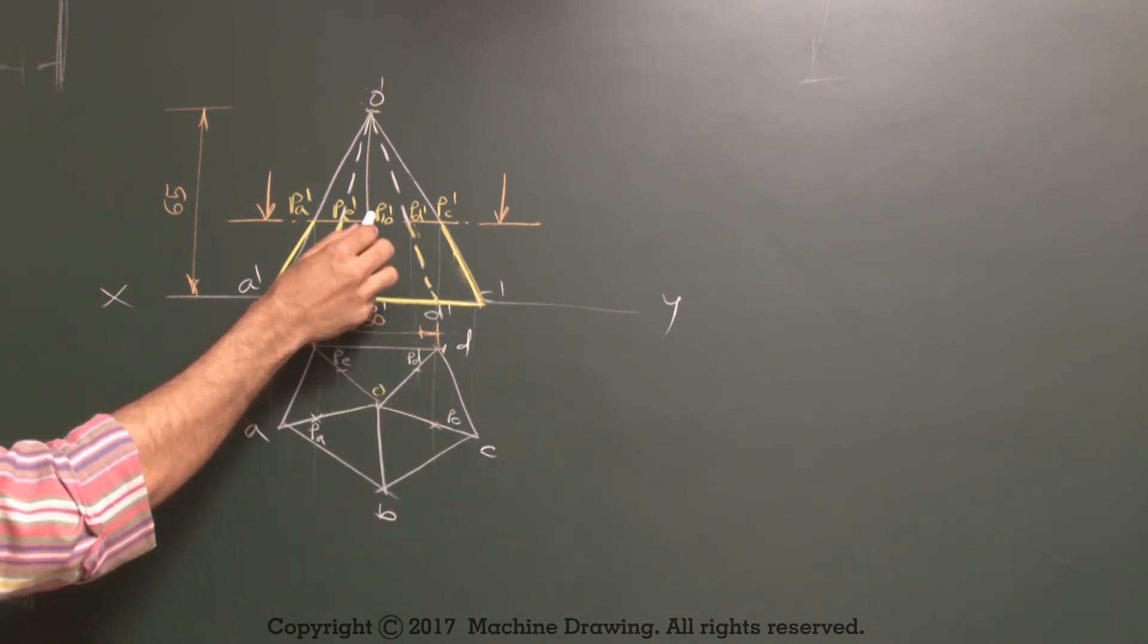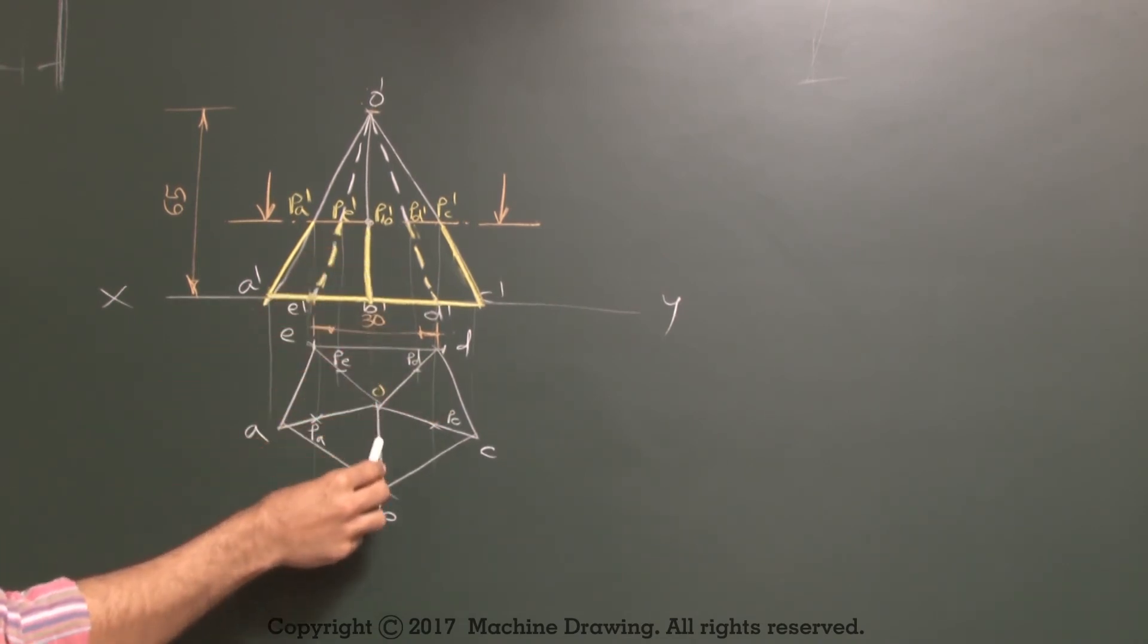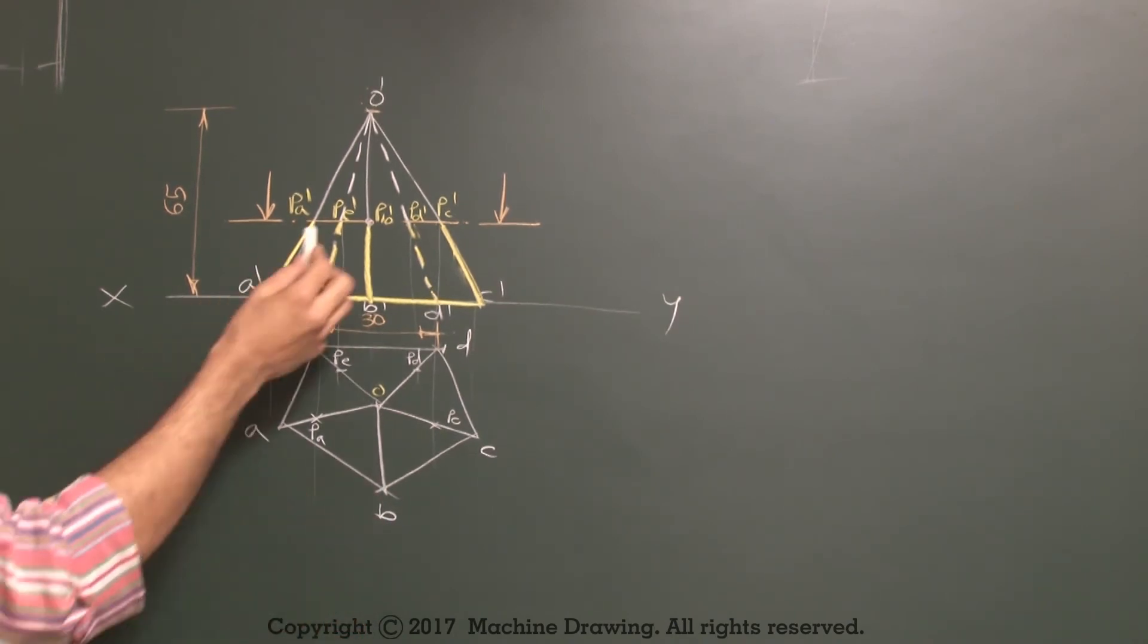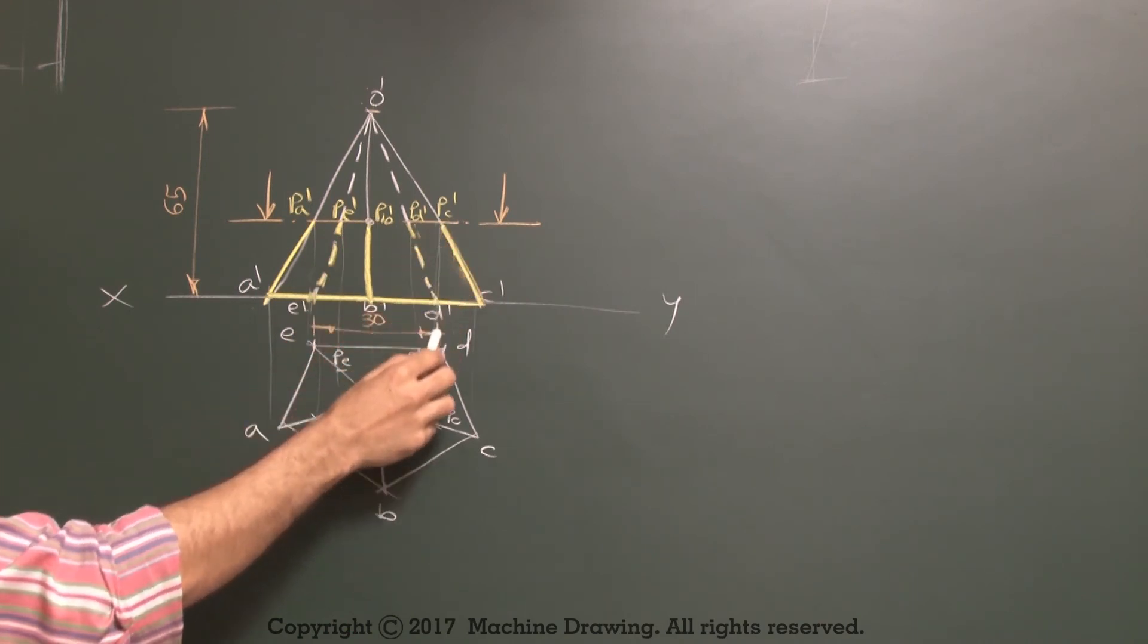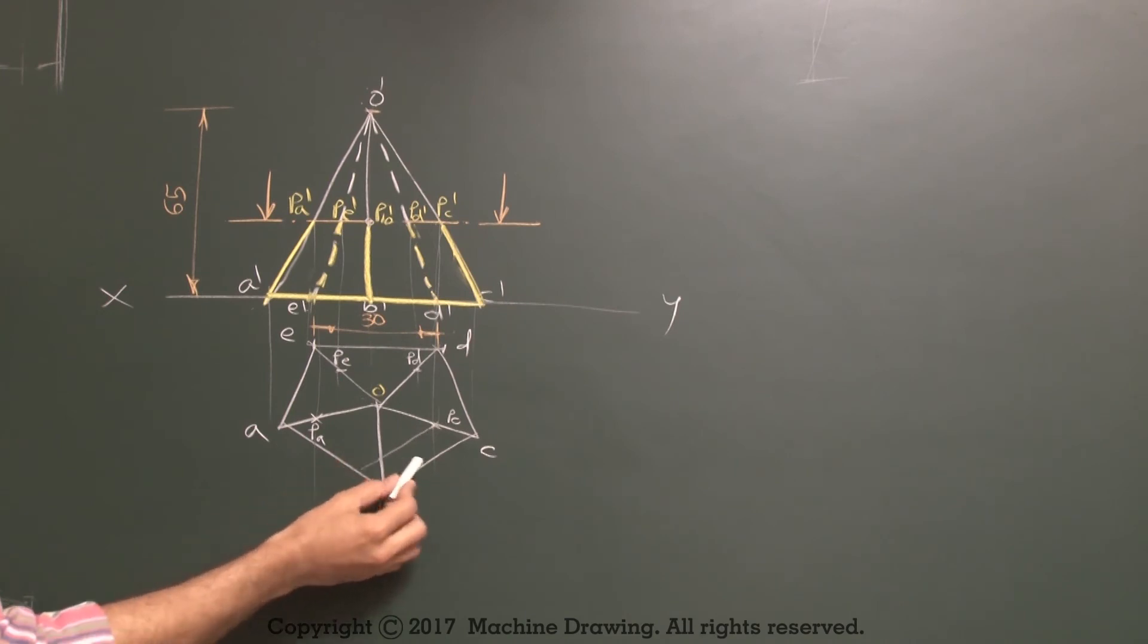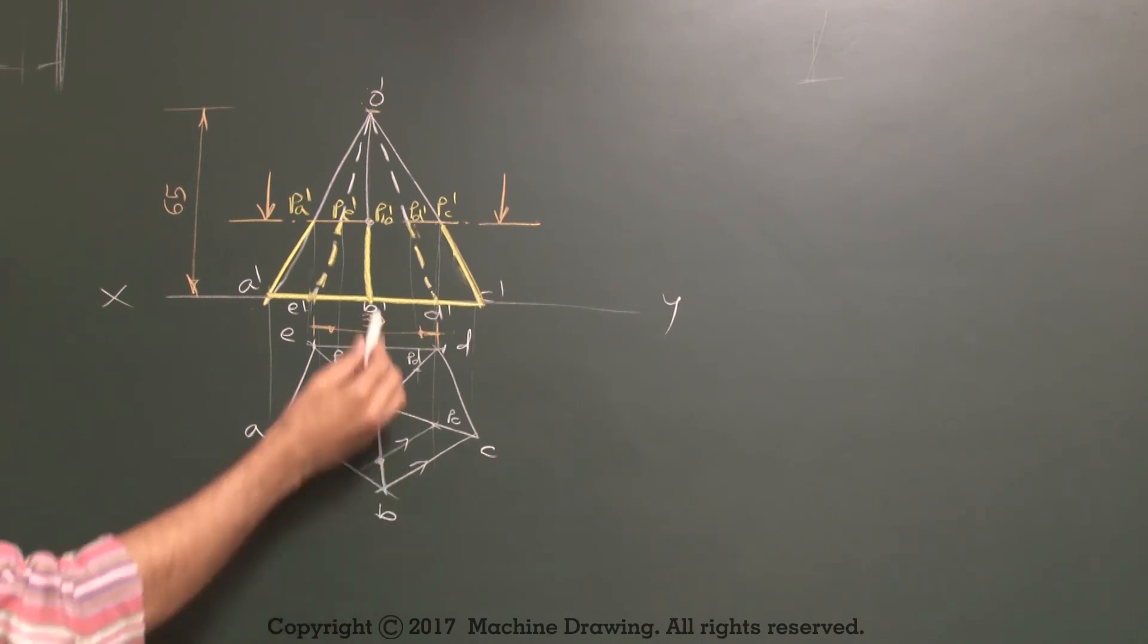Now to transfer this point which is PB dash, if you draw straight it is not intersecting anywhere. So what we need to do? We need to transfer. So we will take this point to the extreme edge. We will go down to here, so it will be here. Then we will take from here parallel to base, parallel to BC. So it will be here.